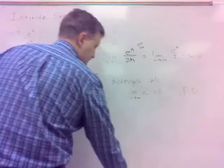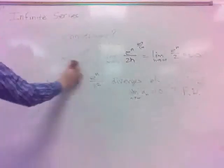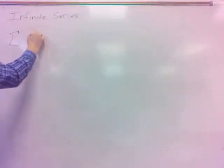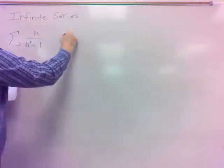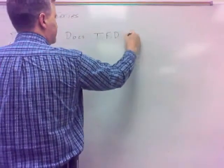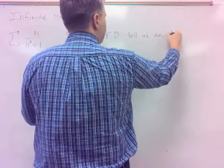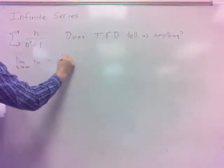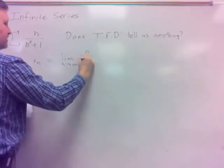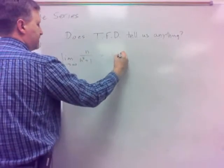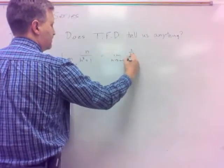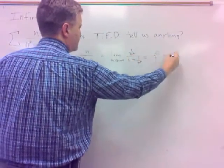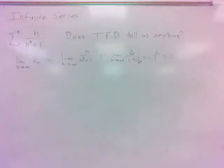Look at this one: the series n over n cubed plus 1. Does the test for divergence tell me anything here? Well, what's the limit as n goes to infinity of a sub n? It's the limit as n goes to infinity of n over n cubed plus 1. If you divide by n cubed, you get 1 over n squared divided by 1 plus 1 over n cubed — that's 0 over 1, that's 0. The limit does equal 0. What does the test for divergence tell me? Tells me nothing.